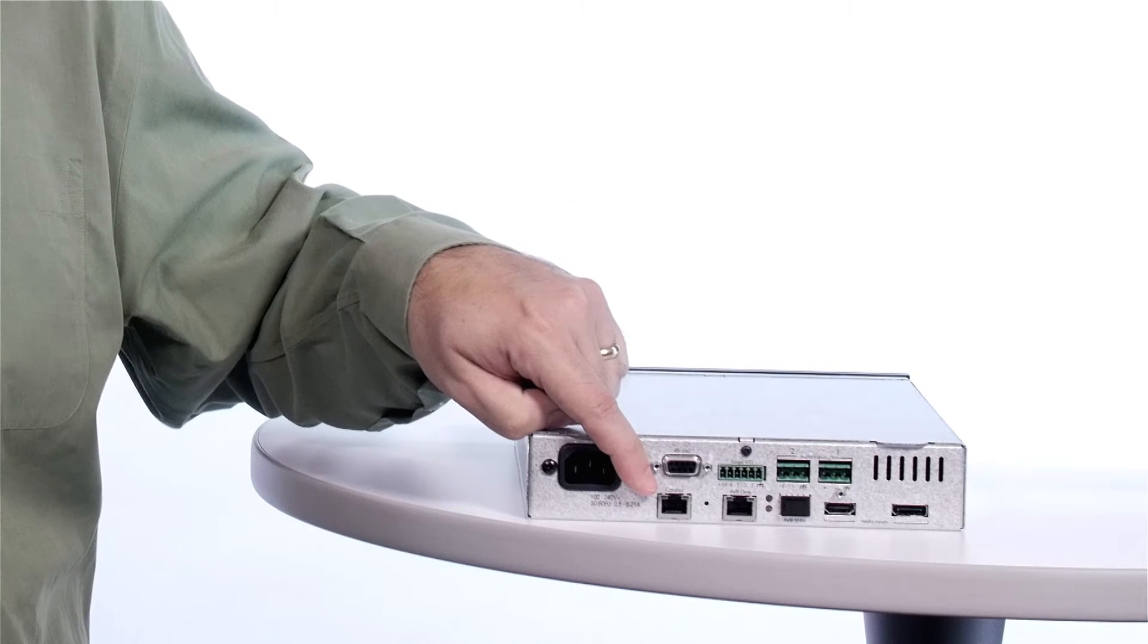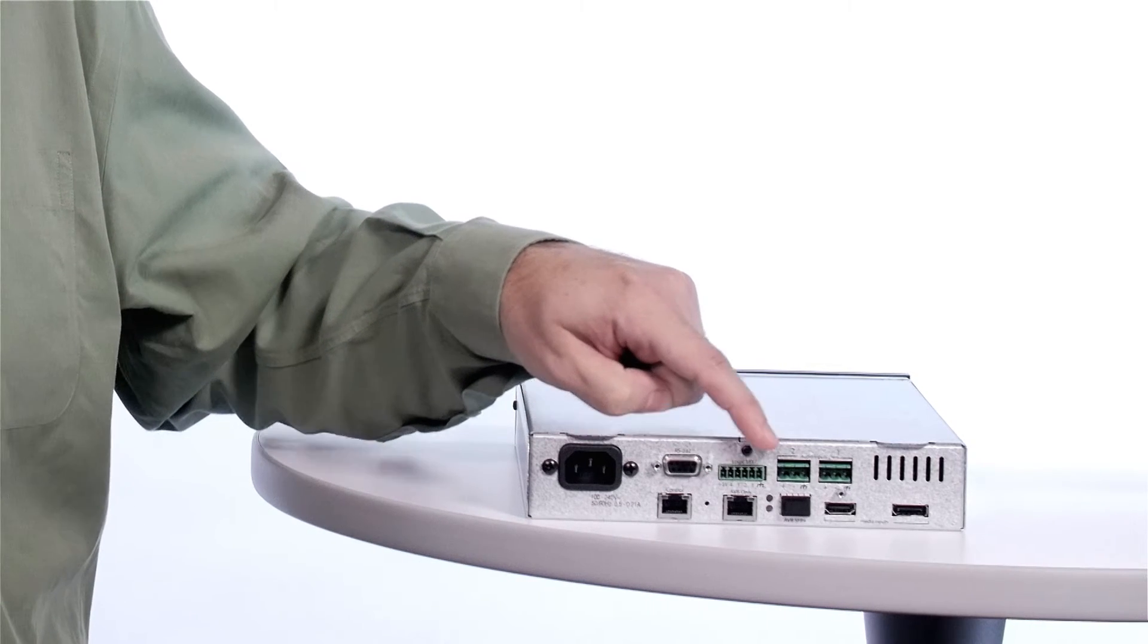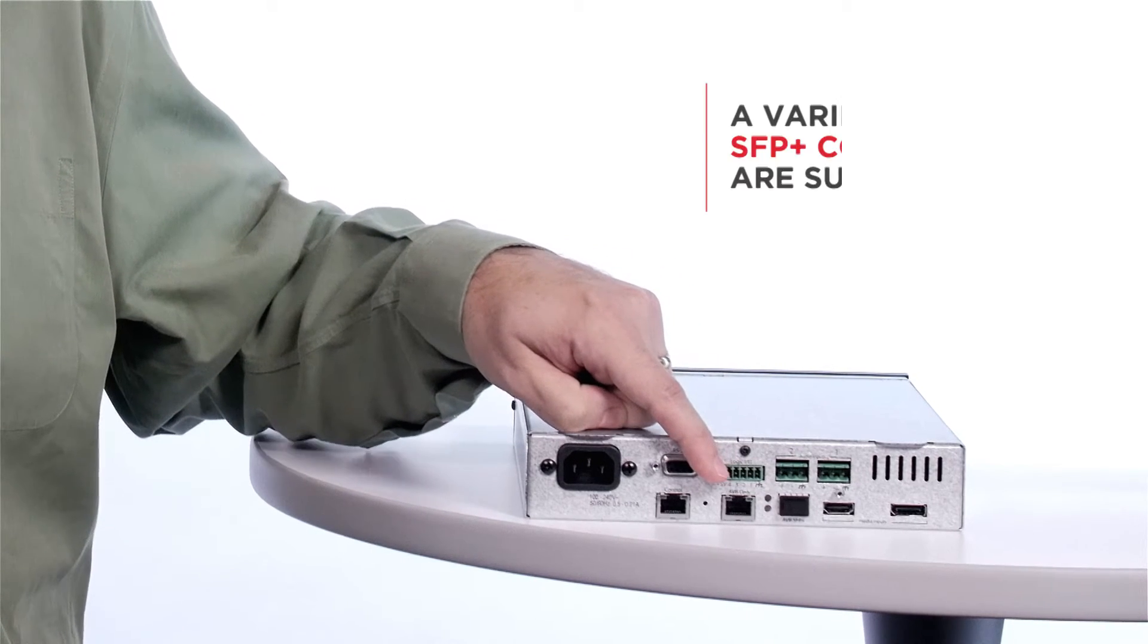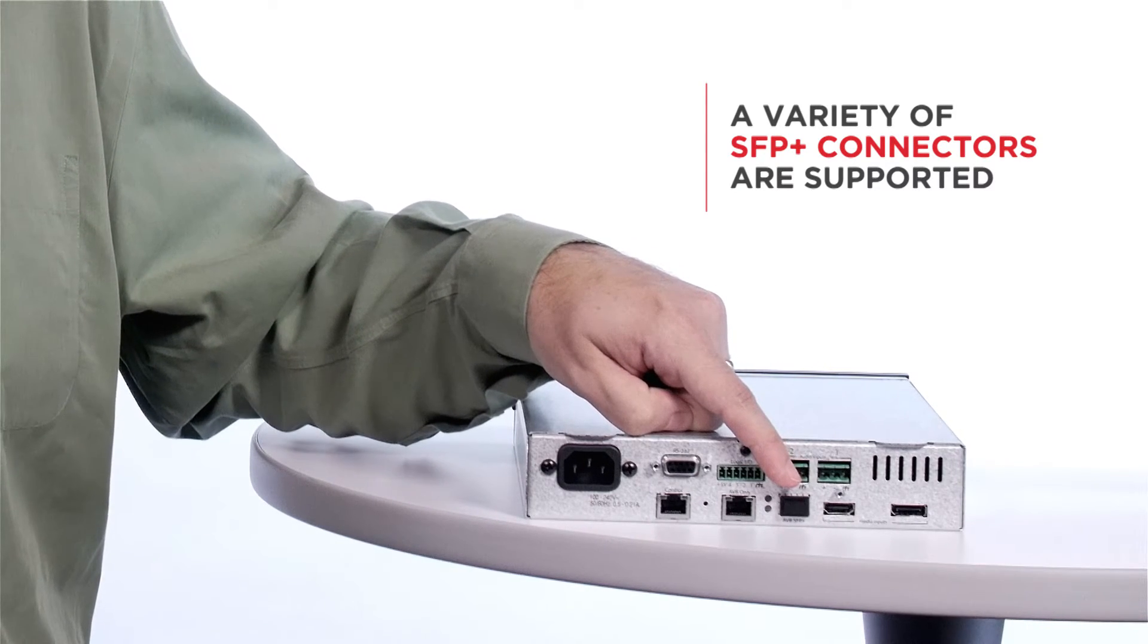We've got a control port here, and we've got two AVB ports here and here. This is our 1GB AVB port. This is our 10GB AVB port with an SFP Plus cage.